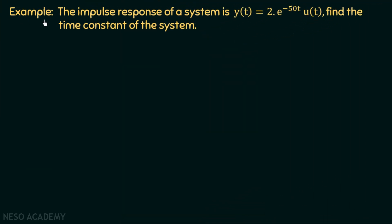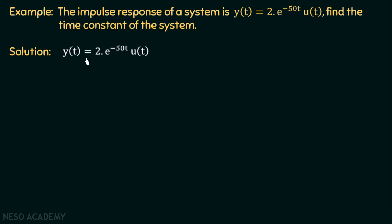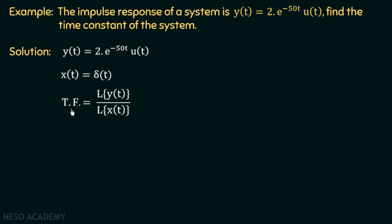Let's take one more example. The impulse response of a system is y(t) = 2*e^(-50t)*u(t). Find the time constant. Since y(t) is the impulse response, the input is an impulse signal. To find the time constant, we first find the transfer function, which is the Laplace transform of the output divided by the Laplace transform of the input.